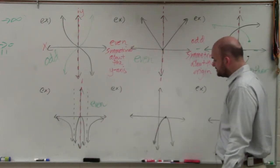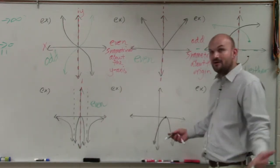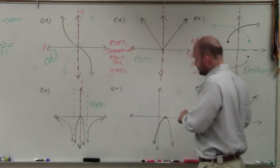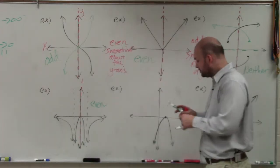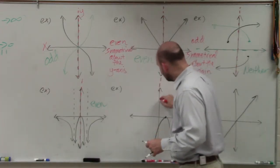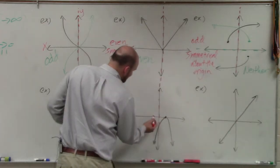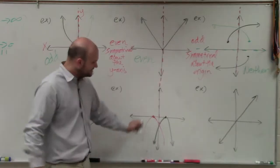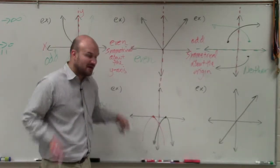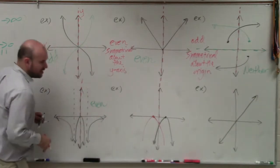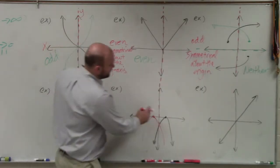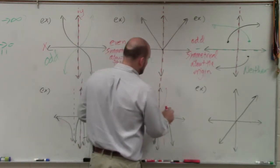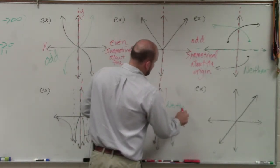This one gets students confused quite a bit because they see a parabola and think it's an even function. However, the way this parabola is written, it's been shifted to the right. If I reflect this graph over the y-axis, it's not going to produce the same graph — you've got to have the mirror image. And if I reflect over the y-axis and then the x-axis, it produces something that is not the same. So this is an example of neither.